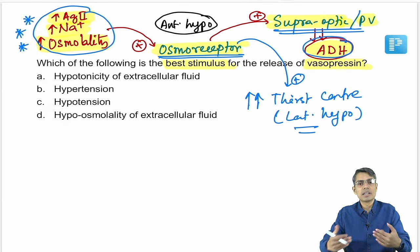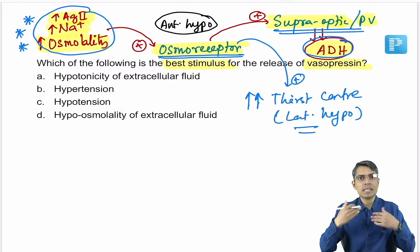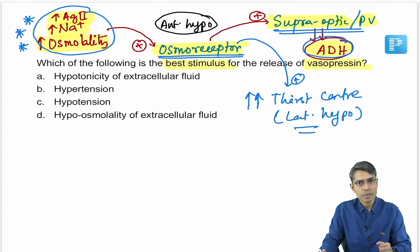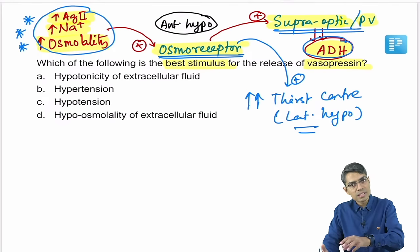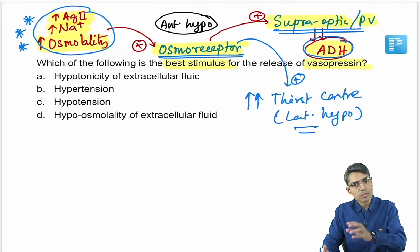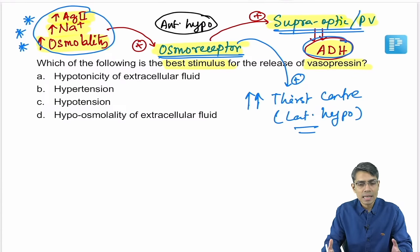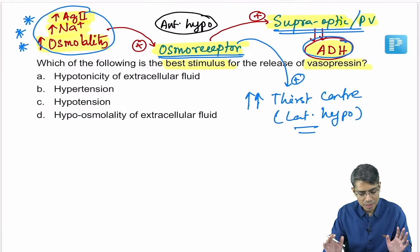When blood osmolality is high, osmoreceptors stimulate ADH secretion and the thirst center. You drink more water, ADH reabsorbs water from the kidney, and the blood gradually becomes less concentrated. That is the basic concept: high osmolality → osmoreceptors stimulated → ADH increased → water reabsorbed from kidney.